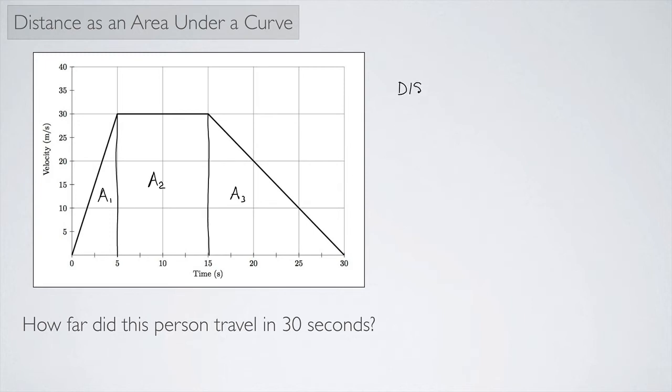So to get my distance, I need to add up these three areas. So the distance traveled is going to equal A1 plus A2 plus A3.